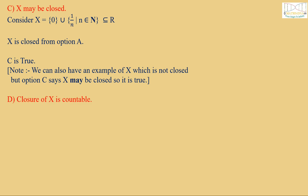Now option D. Closure of X is countable. Consider X = Q ∩ [0,1] where Q is the set of rational numbers. Then X closure is equal to closed interval [0,1] which is uncountable. Therefore, D is false.